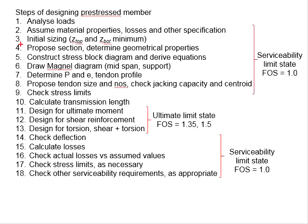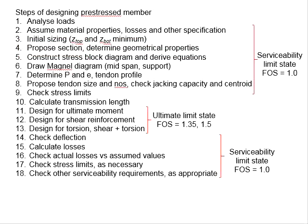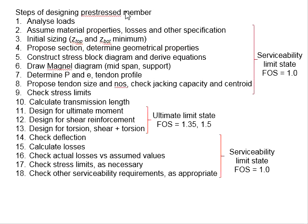Propose a suitable section and determine its geometrical properties. The section modulus of the proposed section needs to be at least greater than the one estimated during the initial sizing.